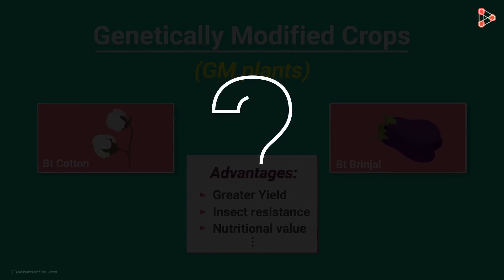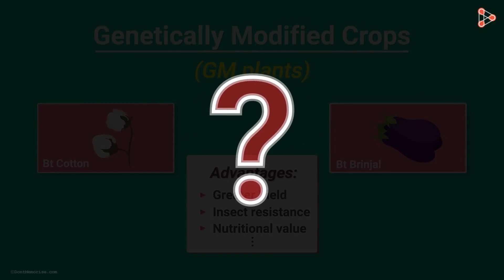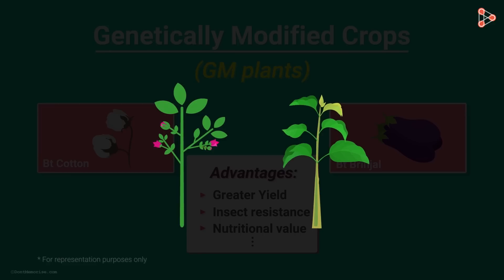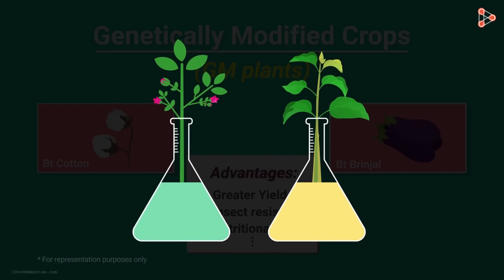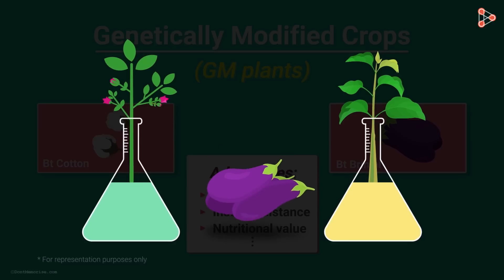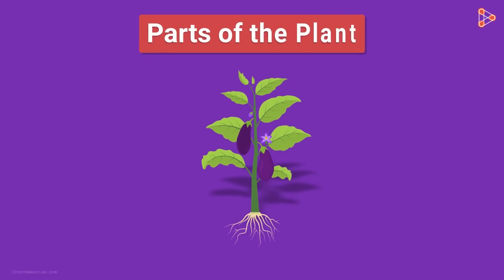But how do we modify the plants? How is the transformation carried out? For that, each plant part acts as a mini-laboratory. Several experiments are carried out on each part, and at the end of many such experiments, finally a product is achieved that has the desired characters. So in order to make useful products, we modify the crops. But in order to modify them, we need to study each and every part of the plant in detail.